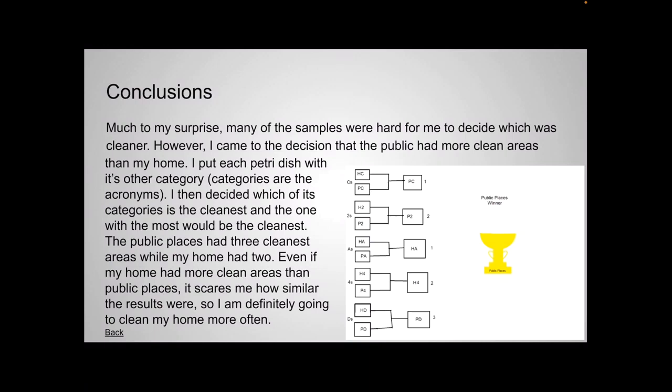Conclusions. Much to my surprise, many of the samples were hard for me to decide which was cleaner. However, I came to the decision that the public place had more clean areas than my home. I put each petri dish with its other category. The categories are the acronyms. I then decided which of its category is the cleanest and which would and the one with the most would be the cleanest. The public place had three cleanest areas while my home had two. Even if my home had more clean areas than public places, it scares me how similar the results were. So I'm definitely going to clean my home more often. I'll let you look at the picture below.